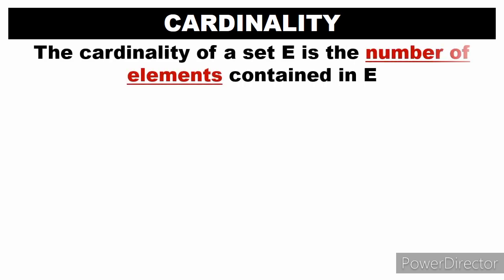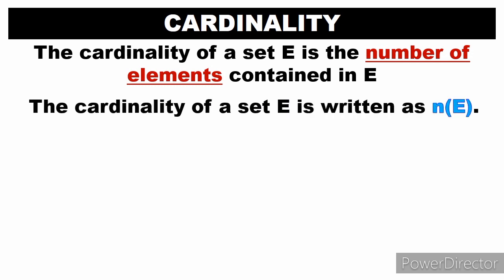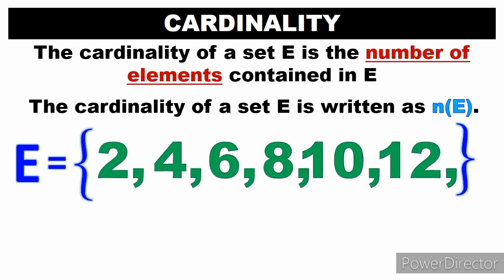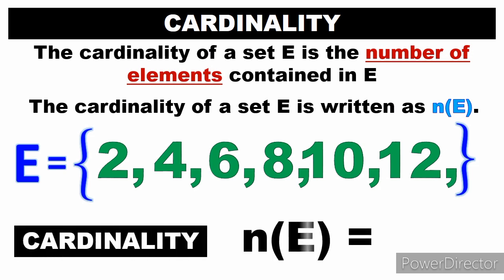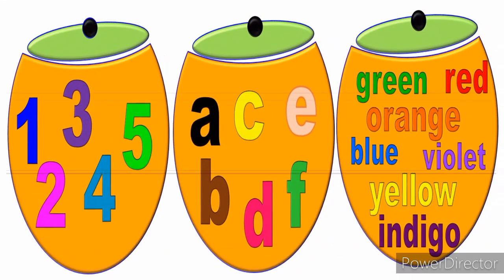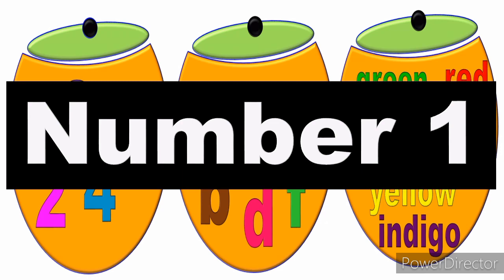Those are the two ways to write elements: listing or roster method, and rule method. Next is cardinality. The cardinality of a set E is the number of elements contained in E, written as n(E). For example, E = {2, 4, 6, 8, 10, 12} — counting the elements, the cardinality of set E is 6.